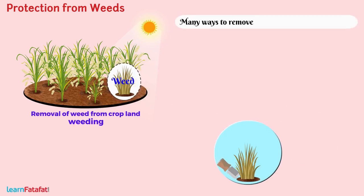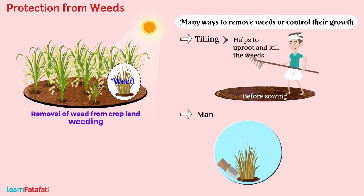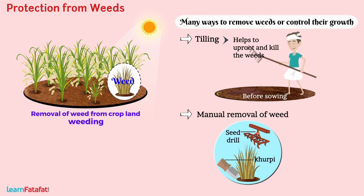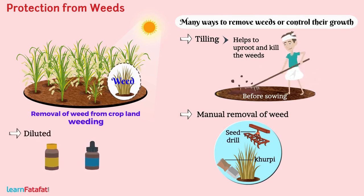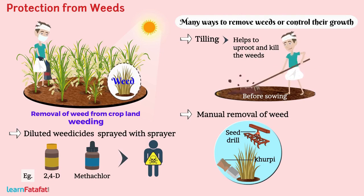There are many ways to remove weeds or control their growth. Tilling before sowing helps to uproot and kill the weeds. Manual removal is done by trowel (khurpi) or seed drill. Some chemicals called herbicides are diluted to the required extent and sprayed with a sprayer to control weeds. These chemicals are toxic to the human body and must be handled carefully — before spraying, nose and mouth must be covered with a clean cloth or mask.